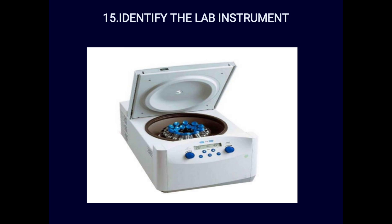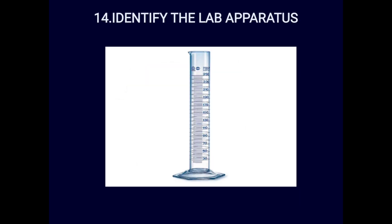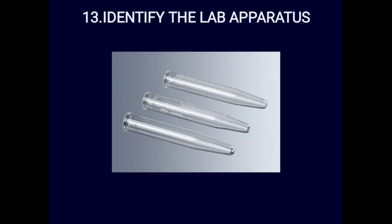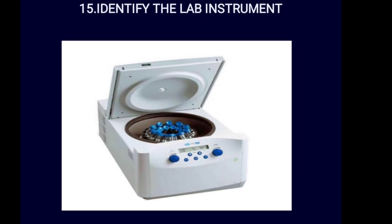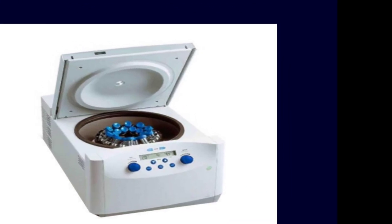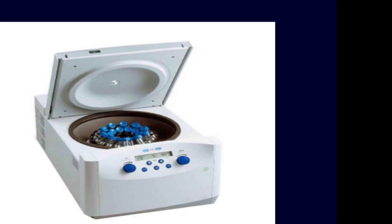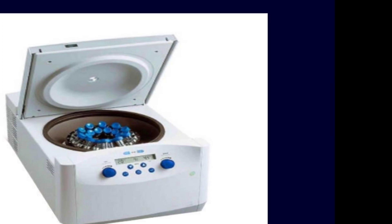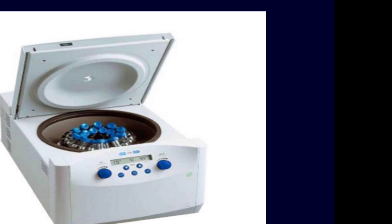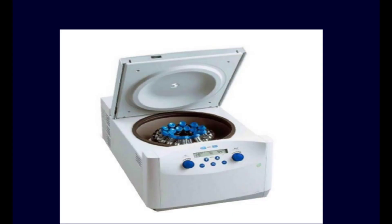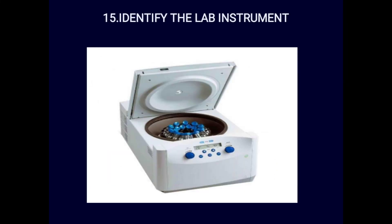Spotter fifteen: identify the lab instrument. This is the centrifuge machine. You can see centrifuge tubes placed inside in a balanced, opposite arrangement. When switched on, it rotates at revolutions per minute — usually 1000 to 3000 rpm in the lab. The answer is centrifuge machine. These are all the main spotters.